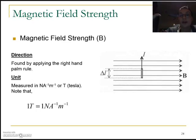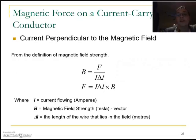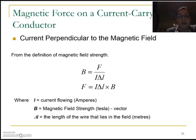The units of B, or magnetic field strength, are measured in Tesla. Tesla is basically a Newton per amp per metre, so instead of writing N·A⁻¹·m⁻¹ we just write T for Tesla. This rule applies when the current is perpendicular to the magnetic field so all of the force is felt. We can rearrange the formula to find force: F = I·ΔL·B, where delta L is just the amount of wire and B is the field strength in Teslas.